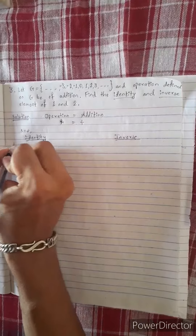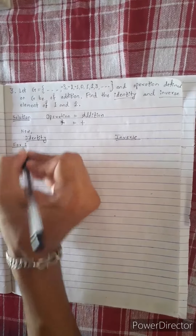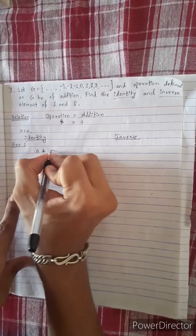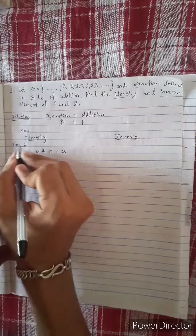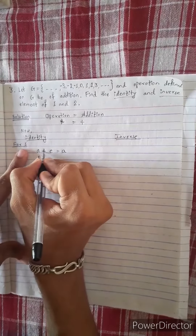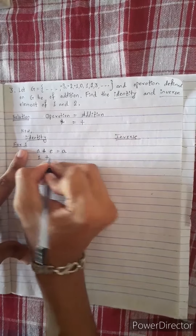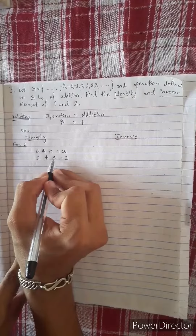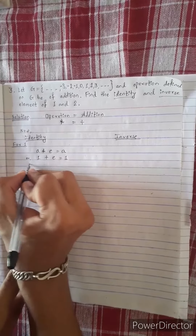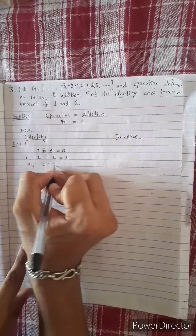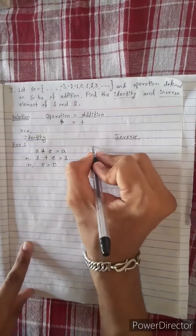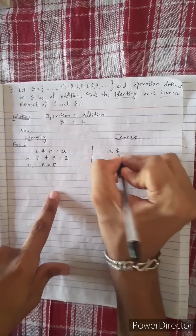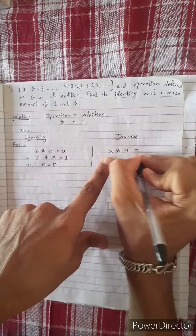In the beginning, we will find identity for 1. Identity: a operation e equals a. So 1 plus e equals a, equals a. Therefore e equals 0. Identity element equals 0, and equals e.